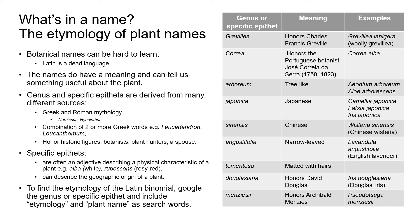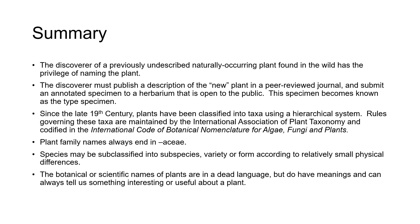To find out the etymology of the Latin binomial, Google it. Google the genus and the specific epithet separately, and also include 'etymology' and 'plant name' as two of your search words. For example, if you want to find out the etymology of the genus name Grevillea, enter 'Grevillea, etymology, plant name' as your search words. In Canvas, you'll find a short list of websites that are really good resources for looking up the etymology of Latin plant names.